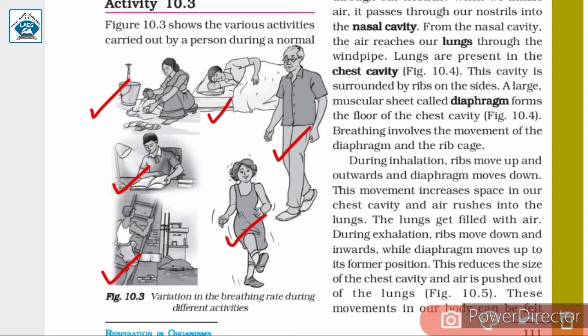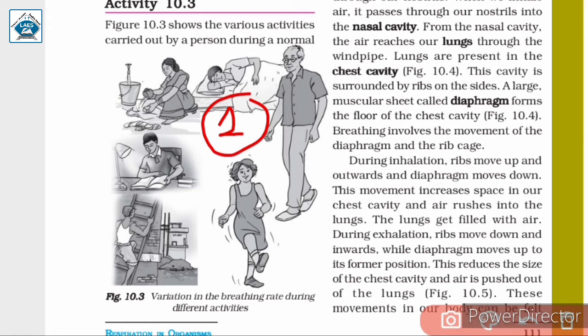We need to identify in which activity the rate of breathing will be the slowest. The sleeping girl has the slowest breathing rate because her body is at rest. The running girl will have the fastest breathing rate because she is doing exercise and will require more energy. The boy who is reading the book will require more energy than the sleeping girl, so he gets number two.